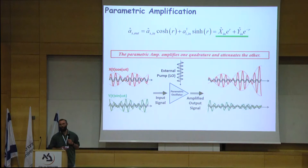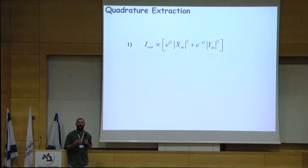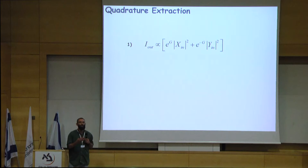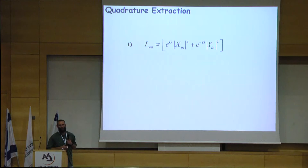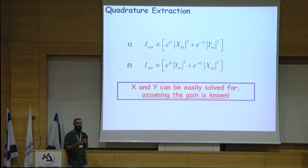An advantage of parametric homodyne is that I only need a single local oscillator in order to measure the entire bandwidth, all of the frequency pairs simultaneously. The output of the parametric amplifier is a combination of one quadrature that is amplified and the other orthogonal quadrature that is attenuated. Even if the gain is not strong enough, by applying a pair of two measurements — first amplifying one quadrature, then amplifying the other — I can solve for the average quadrature intensities, assuming I know what the gain of the amplifier is.